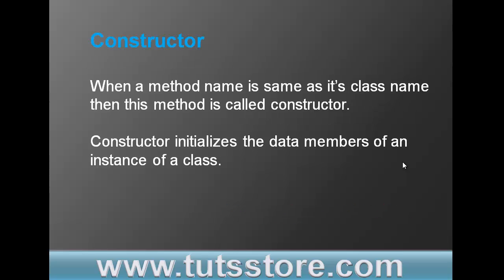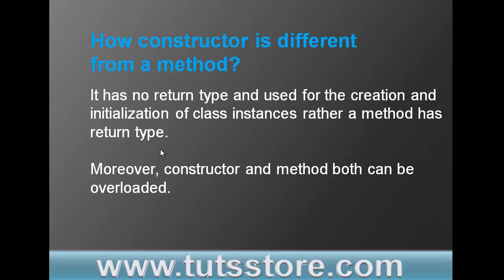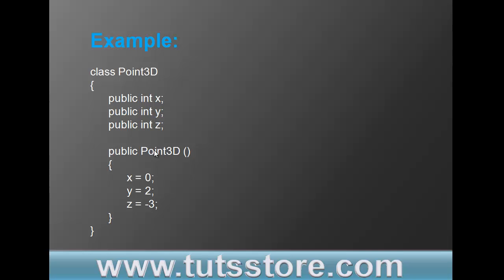First of all, a constructor: when a method name is the same as its class name, then this method is called a constructor. A constructor initializes the data members of an instance of a class. For example, Point3D is a class with three data members: integer x, integer y, integer z, and the method public Point3D has the same name as the class. How is a constructor different from a method? It has no return type and is used for the creation and initialization of class instances, whereas a method has a return type.